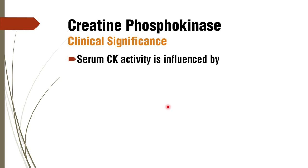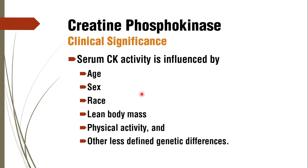Total serum CK activity is influenced by age, sex, race, lean body mass, physical activity, and other genetic differences. Tissues richest in CK include skeletal muscle (the largest contributor), myocardium, brain, and smooth muscle — so total body muscle mass is the primary determinant of total CK activity.